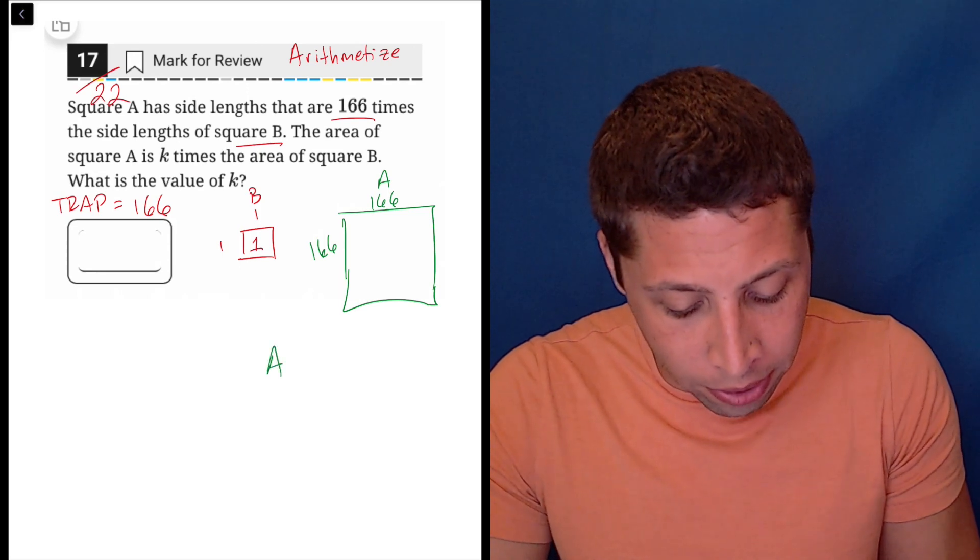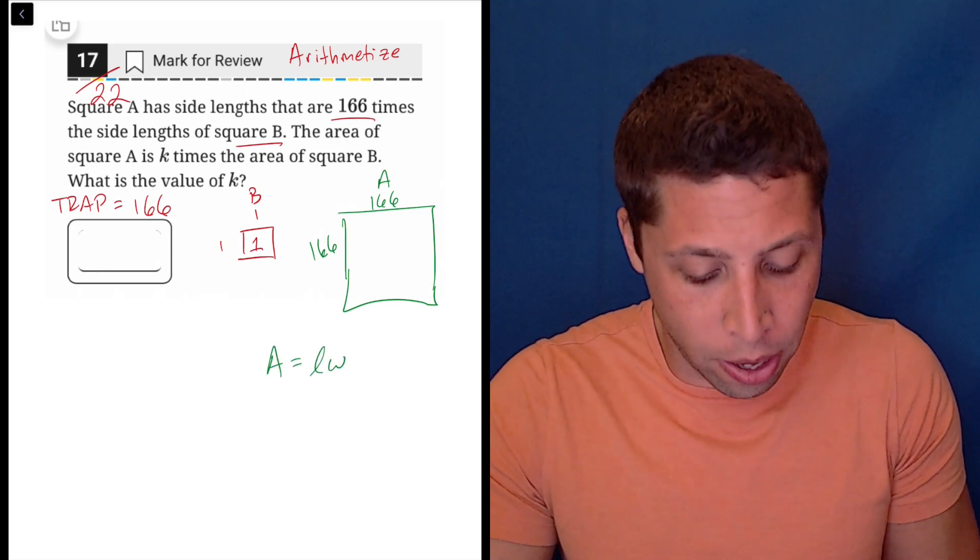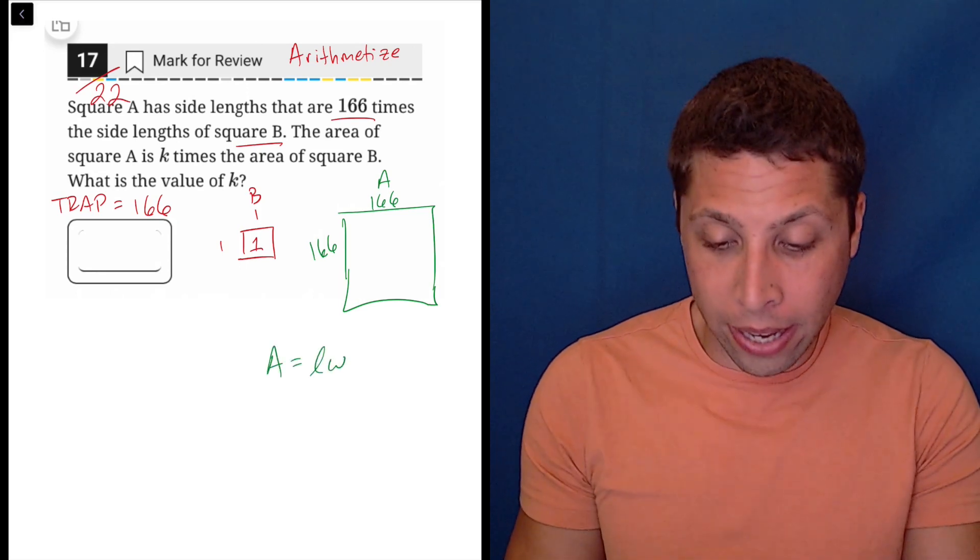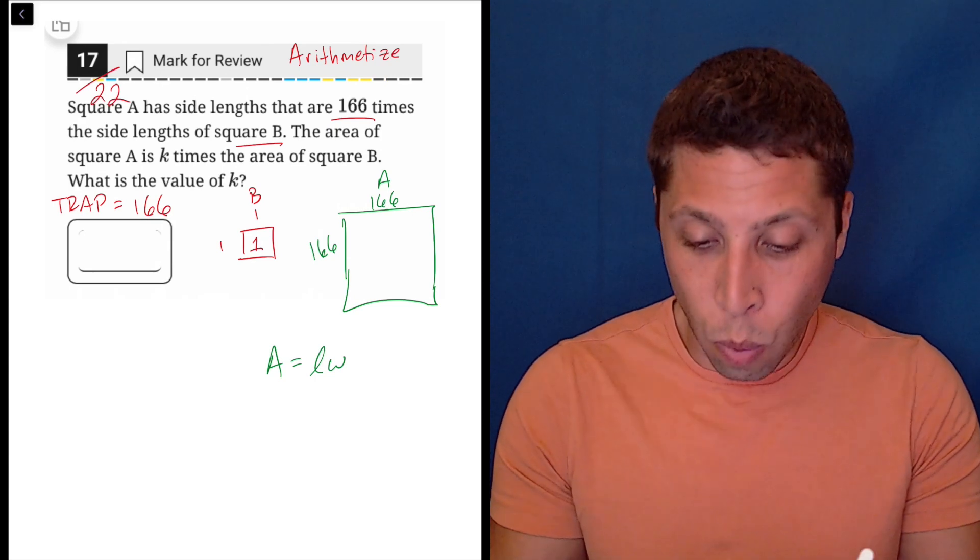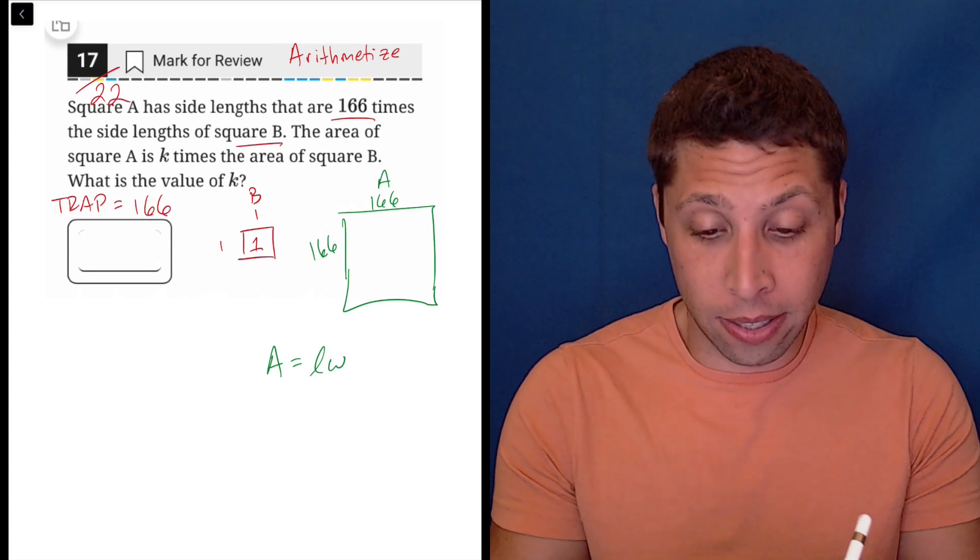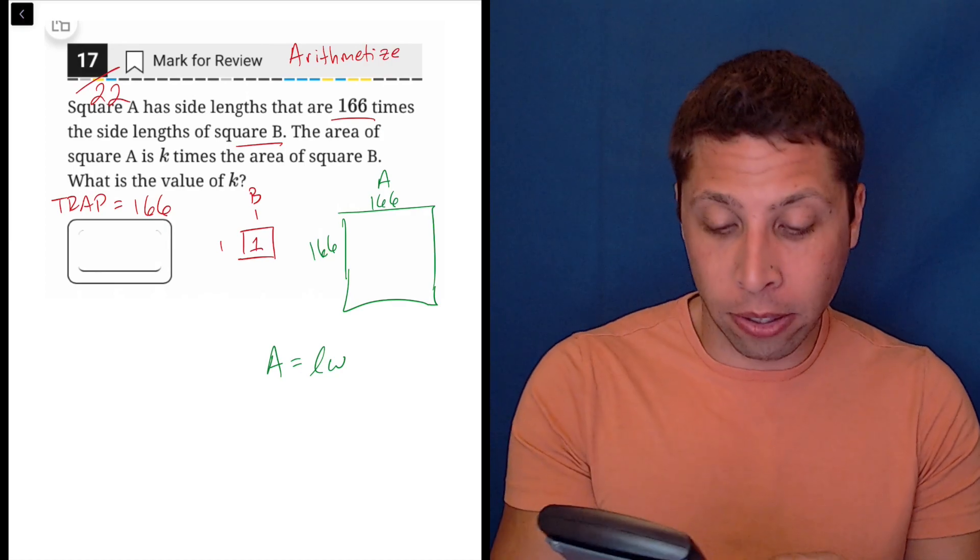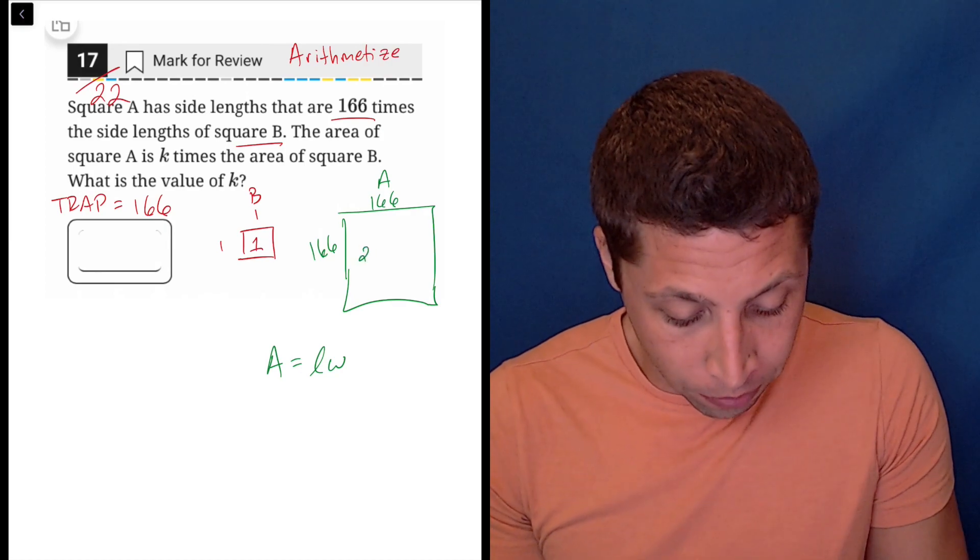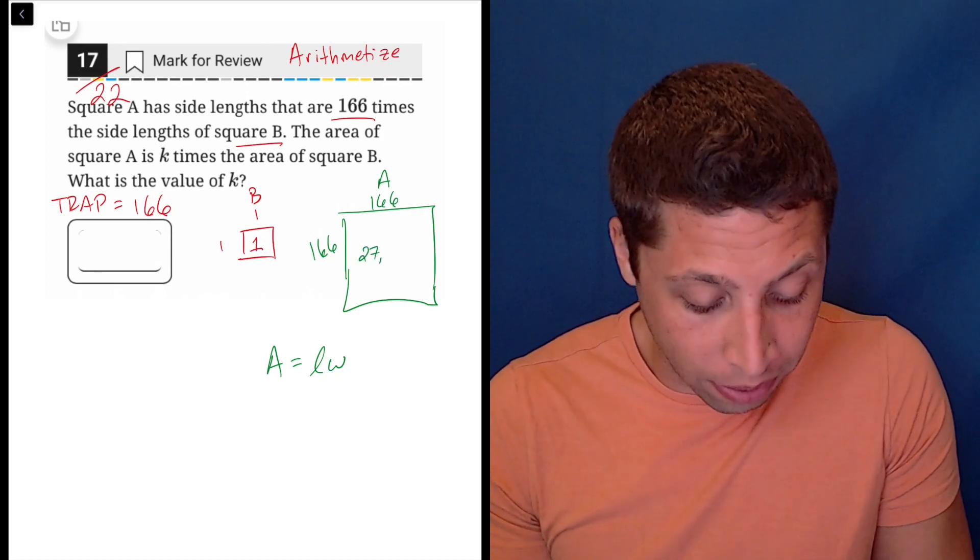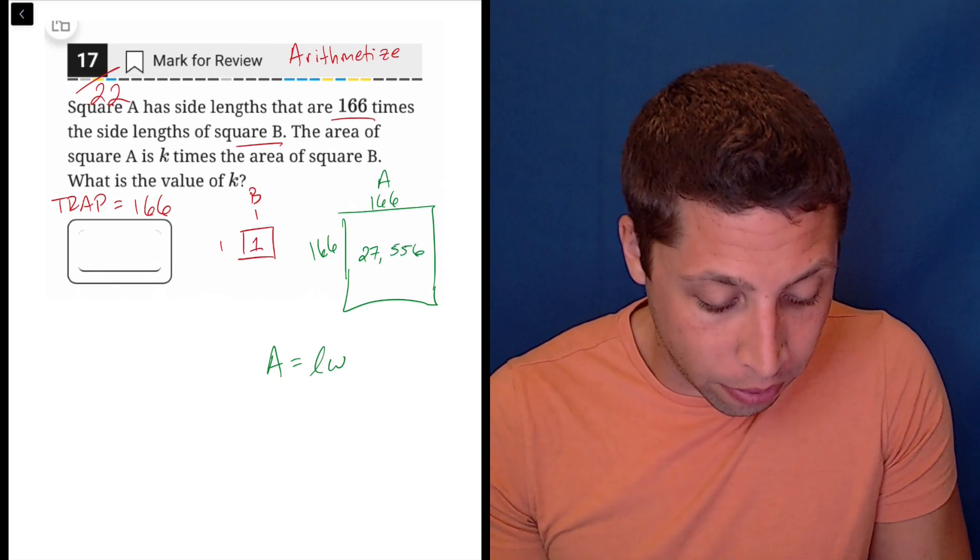Now if we're doing area is length times width, or side squared, however you want to think about it. Now you're going to need the calculator. There's no reason for you to know 166 times 166, but I'm just using my regular calculator here and I get a big number, 27,556.